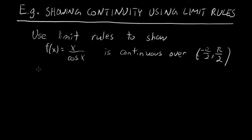In this video, we're going to be using the limit rules to show that a function f of x is continuous over a specified domain. Specifically, we're going to use the limit rules to show that f(x) = x/cos(x) is continuous over the open interval (-π/2, π/2).